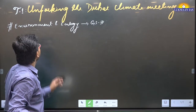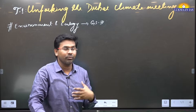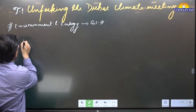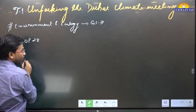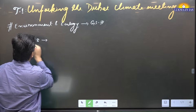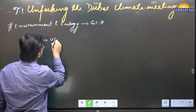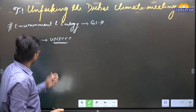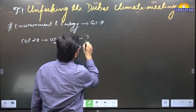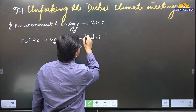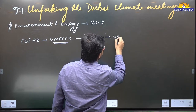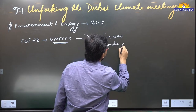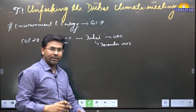The author named this the Dubai Climate Meeting because COP28 — the 28th Conference of Parties of the United Nations Framework Convention on Climate Change (UNFCCC) — is going to be held in Dubai. Dubai is part of the United Arab Emirates and this conference is going to happen in December 2023.